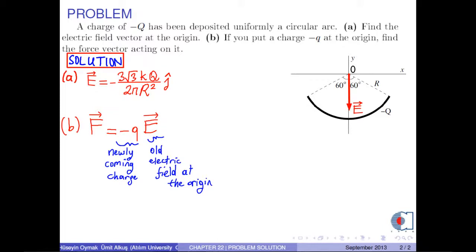Therefore, we have simply 3 squared of 3 times k times q squared over 2 pi r squared j hat. That is, this is a repulsive force.